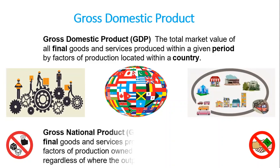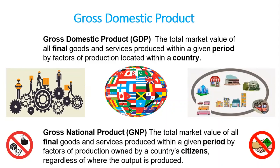Now, to see the difference between GDP and GNP, we have the definition of the gross national product, GNP, which is the total market value of all final goods and services produced within a given period by factors of production owned by a country's citizens, regardless of where the output is produced. So in GNP we focus more on the citizenship.